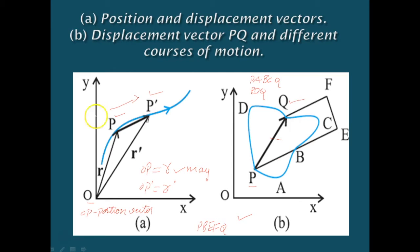Now you understand the difference between distance and displacement. Distance is the total path length, and we must consider the path taken by the object. Whereas displacement considers only the initial and final positions, without worrying about the path undertaken by the object.